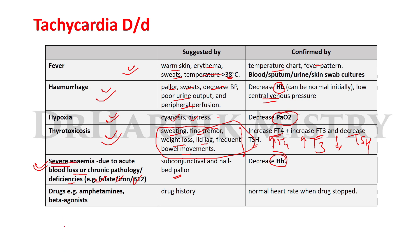When tachycardia occurs with a drug history and the heart rate returns to normal when the drug is stopped, this type of tachycardia is associated with drugs related to amphetamines and beta agonists. These are the differential diagnoses of tachycardia.